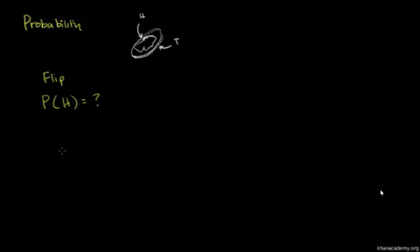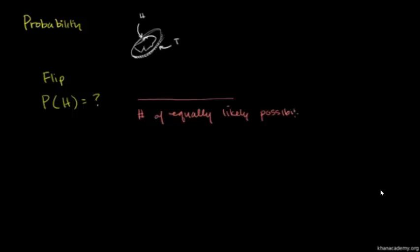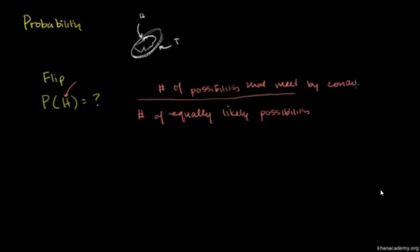So one way to think about it — and this is the way that probability tends to be introduced in textbooks — is: how many different equally likely possibilities are there? So number of equally likely possibilities, and of those, I care about the number that contain my event — the number of possibilities that meet my conditions.